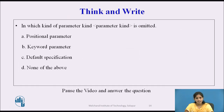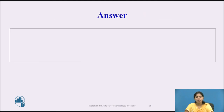After seeing the different types of parameters, can you tell me: in which kind of parameter is the parameter kind omitted? The options are: positional parameter, keyword parameter, default specification, or none of the above. Pause the video and think about it. The answer is the positional parameter — in the positional parameter, the parameter kind is omitted.